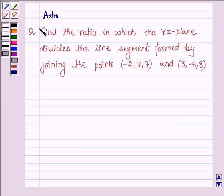Hello and welcome to the session. My name is Asha and I am going to help you with the following question which says find the ratio in which the YZ plane divides the line segment formed by joining the points (-2, 4, 7) and (3, -5, 8).